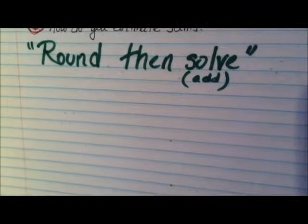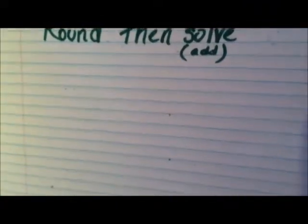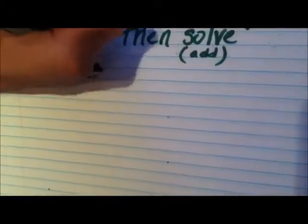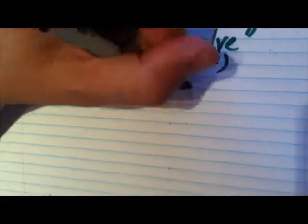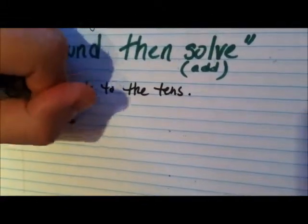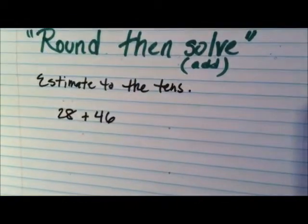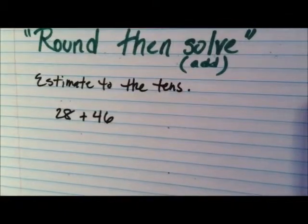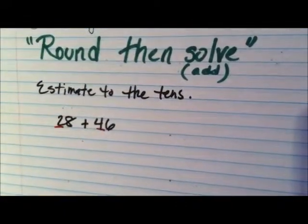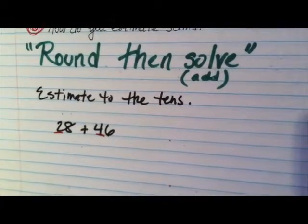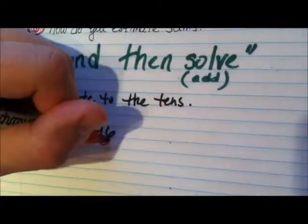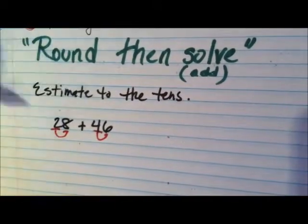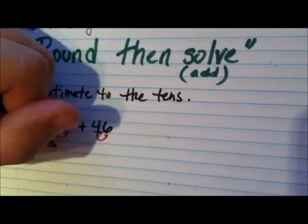You will be asked to estimate — they'll tell you to estimate the sum to the nearest ten. Let's say you have twenty-eight plus forty-six. We want to round to the nearest ten and find the sum. If we're rounding to the nearest ten, do you remember 'four to the floor and five to the sky'? We look next door to the neighbor to the right, and that tells us if we round up or down. The eight is here, so that's five to the sky — twenty-eight rounds to thirty.